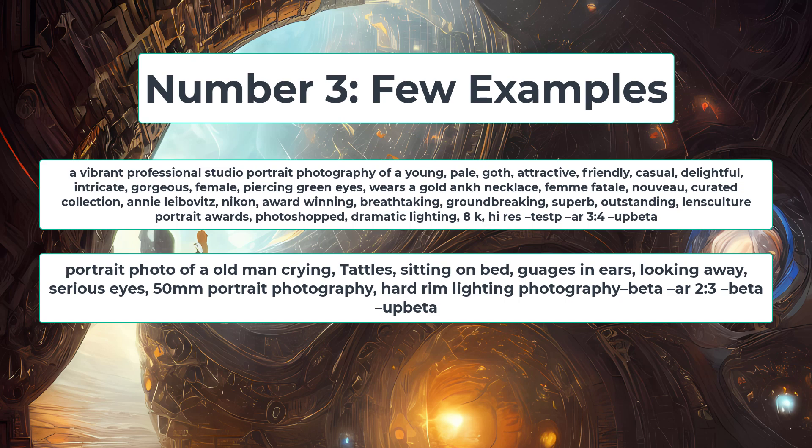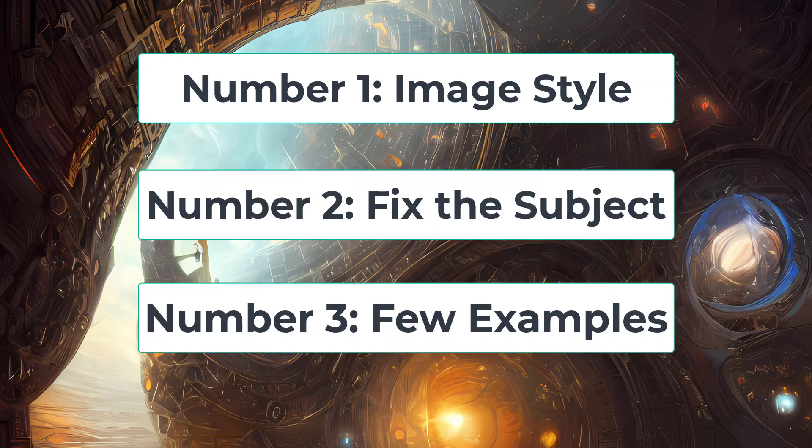Number three, which is the last one, is to prime GPT with examples. You should present some example prompts to ChatGPT so that it learns what type of overall prompt you are looking for. Given these three things, ChatGPT can generate several prompts that will surely surprise you. Let's prompt ChatGPT with these three things, then input those prompts to Stable Diffusion and check the results.